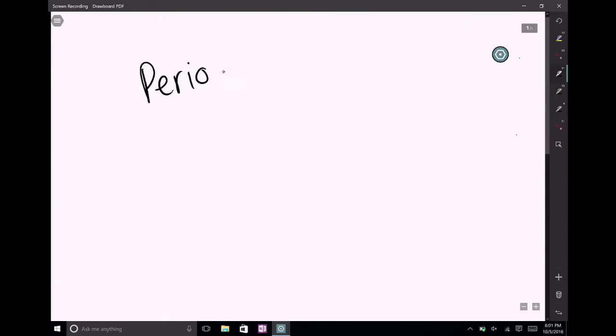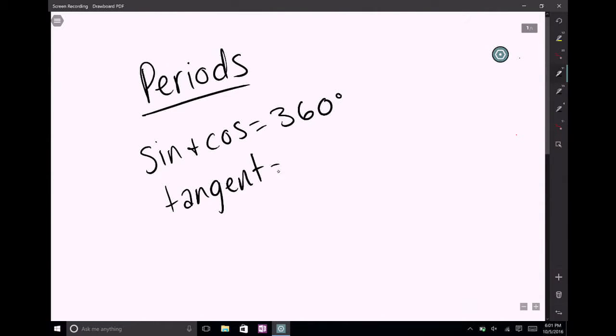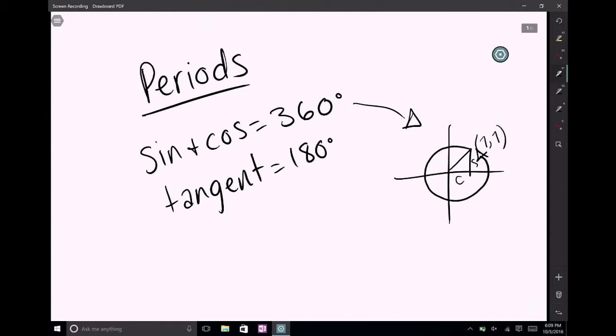Besides that, the only other important thing in 3.3 is the difference in periods of sine, cosine, and tangent. Sine and cosine have a period of 360 degrees, while tangent has a period of 180. This actually does make sense, because for sine and cosine, the x and y coordinates, 1, 1 for example, are never going to be the same as they are in the first quadrant until they've gone around 360 degrees. This being sine, this being cosine. So obviously, to have a full period, you have to go around 360 degrees. However, for tangent, it's going to be different, because tangent is the slope, meaning this would be tangent. Let's say we call this tan 1. If you go 180 degrees to about right here, tan 1 is going to be continued, because it's a slope. Therefore, you only have to go 180 degrees to find the exact same slope. The same would be true for the other quadrants as well.